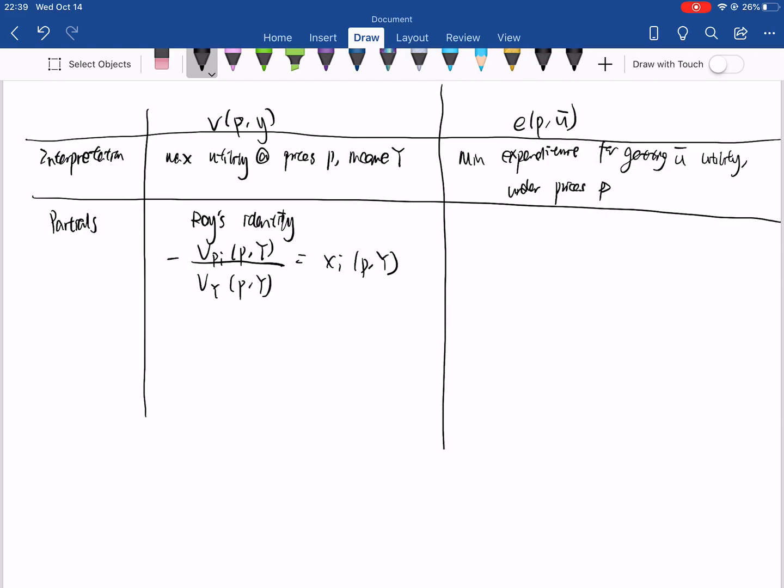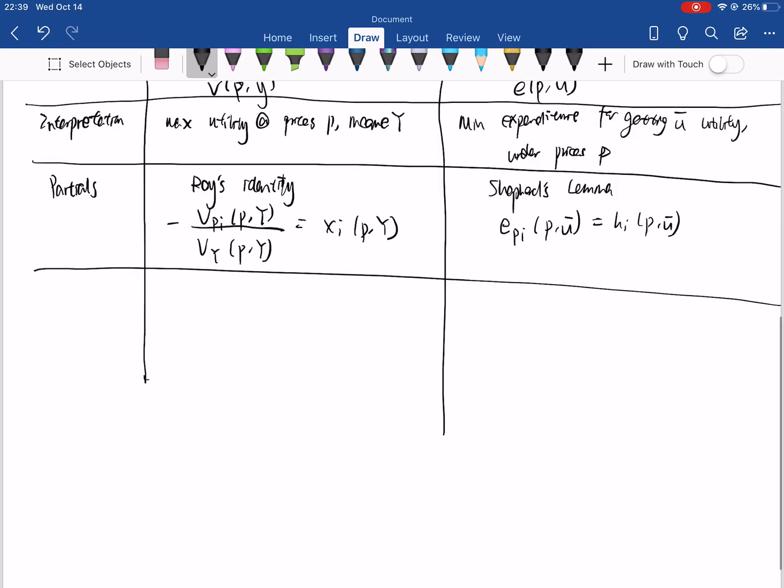For the Hicksian demand, Shephard's lemma tells us that the derivative of the expenditure function with respect to prices is equal to the Hicksian demand. These are very useful identities that we could employ and there are also very intuitive explanations for these.